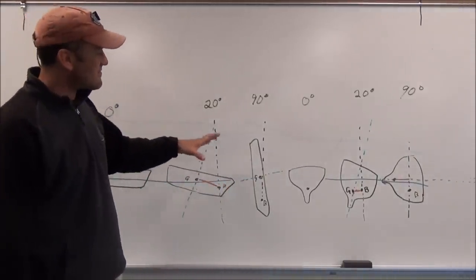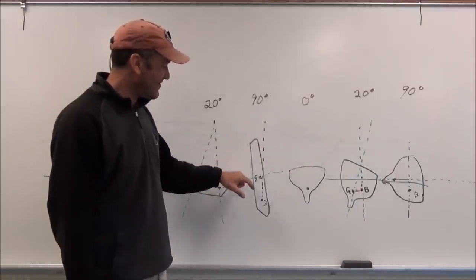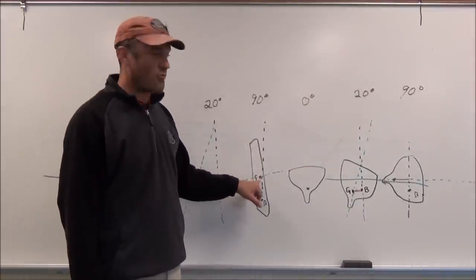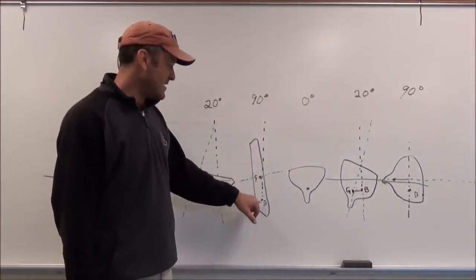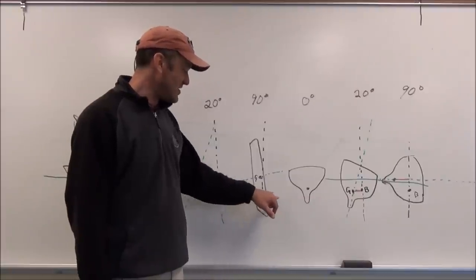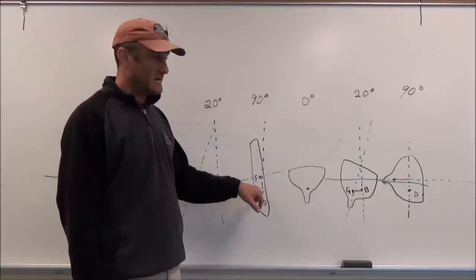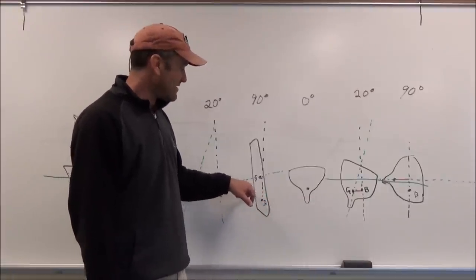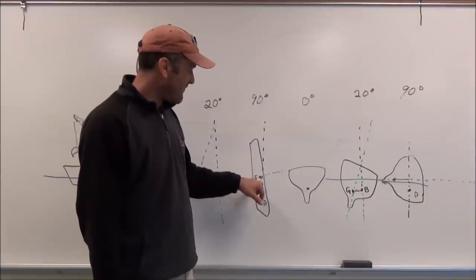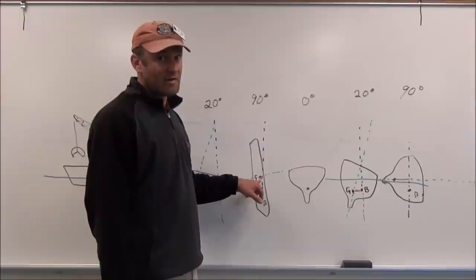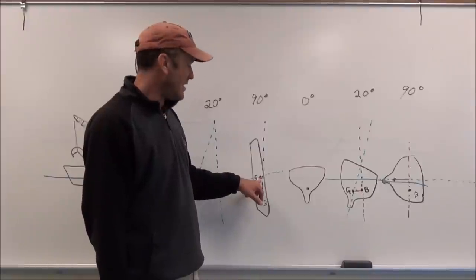as that barge starts to go over, when you get to 90 degrees, you have little to no righting arm. Because the center of buoyancy will no longer shift, it just shifts down, if anything. But it doesn't go side to side. And therefore, it does not provide a very large righting arm.